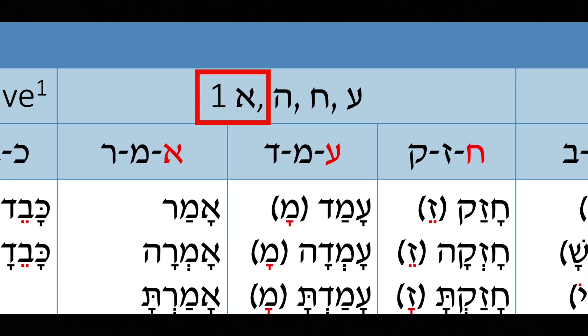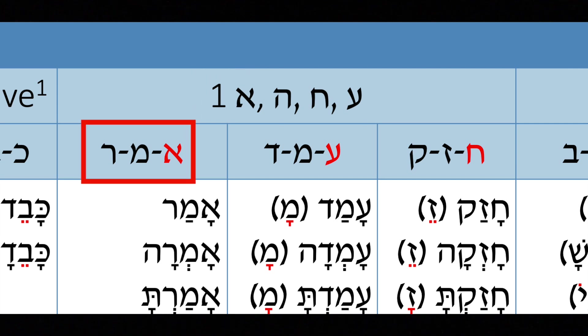Since we have Amar, which begins with an aleph, we want to look at the column for the first letter — aleph — right there. And we actually see the example is Amar, beginning with an aleph.